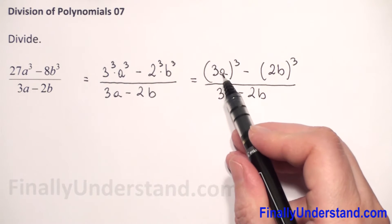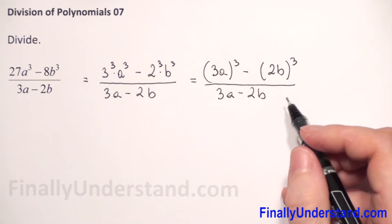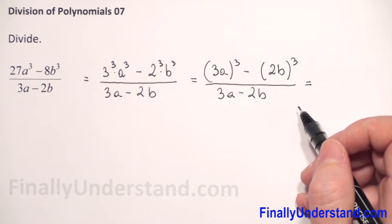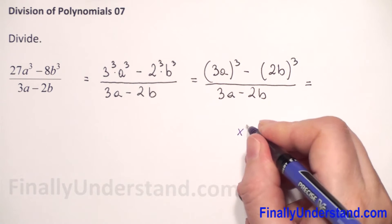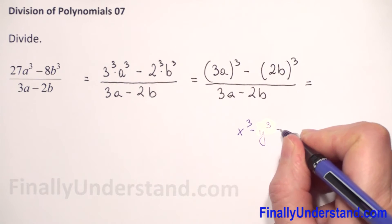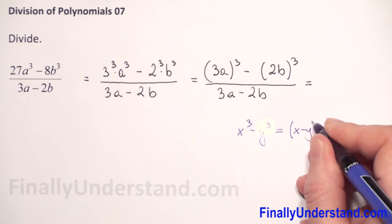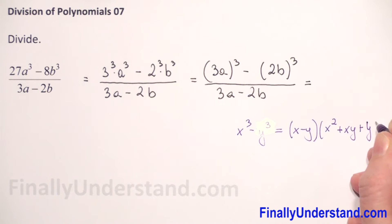We see that we have in parenthesis the same term 3a, 2b. So now I will use formula for difference of two perfect cubes. Let me remind you this formula, when we have x³ minus y³, this is equal x minus y times x² plus xy plus y².